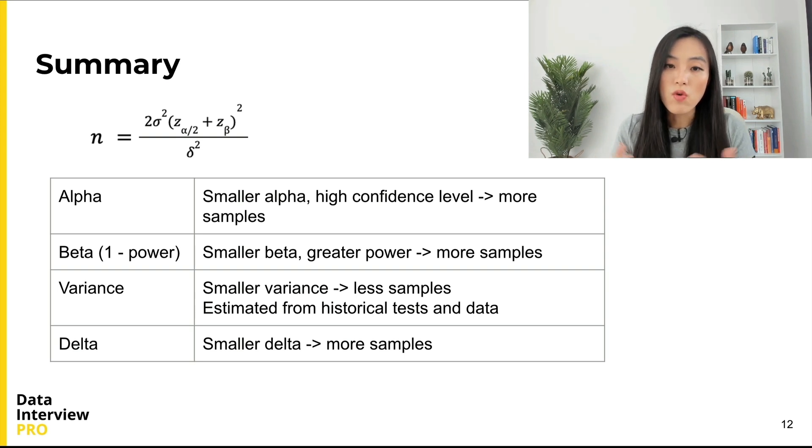The larger the variance, the more samples needed to collect to run the experiment. The smaller the variance, the less samples needed to be collected. Also, when we want to detect smaller changes, that is when δ becomes smaller, we will need more samples.